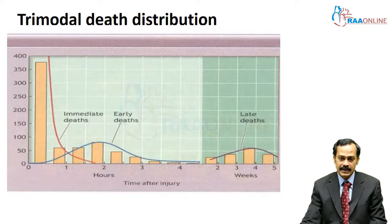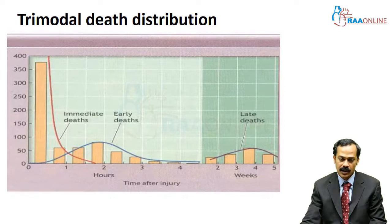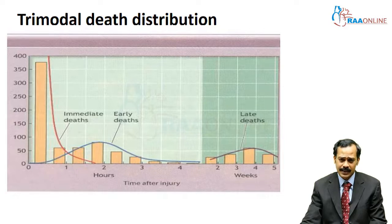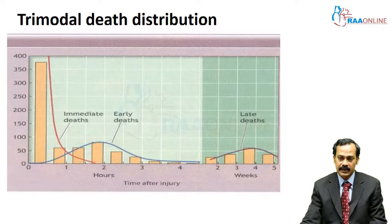It is these early deaths, which happen around two hours following trauma, that are preventable if the patient reaches the hospital and appropriate diagnosis and treatment is initiated. Possible causes of these early deaths include extradural hematoma, subdural hematoma, pneumothorax, hemothorax, and bleeding into the abdominal cavity — all preventable.